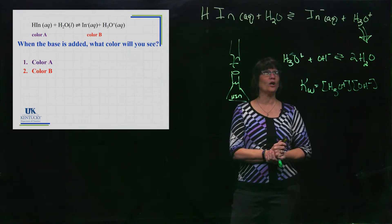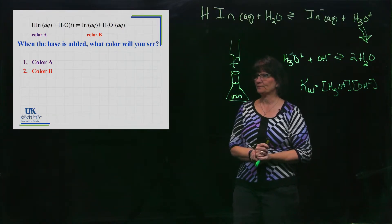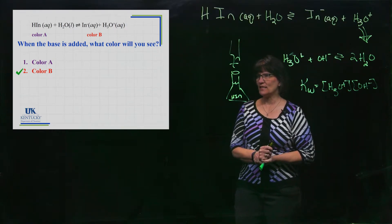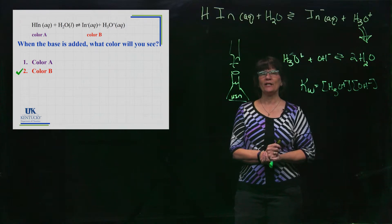So one of the things that you need to make sure you pull forward is anytime this goes up, this goes down, and vice versa. So this is going to shift to the right if you were to add a base to it. Now if you added a base to it, what color are you going to see? Well, we're going to push it to the right and eventually see color B. So that's how an indicator works.